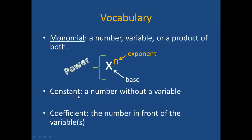A constant is a number without a variable, such as the number 5, negative 7, or one half. A coefficient is the number in front of a variable. So if I had the example 2x, the coefficient would be 2. If I had the term 4x squared, the coefficient would be 4, the base would be x, and the exponent would be 2.